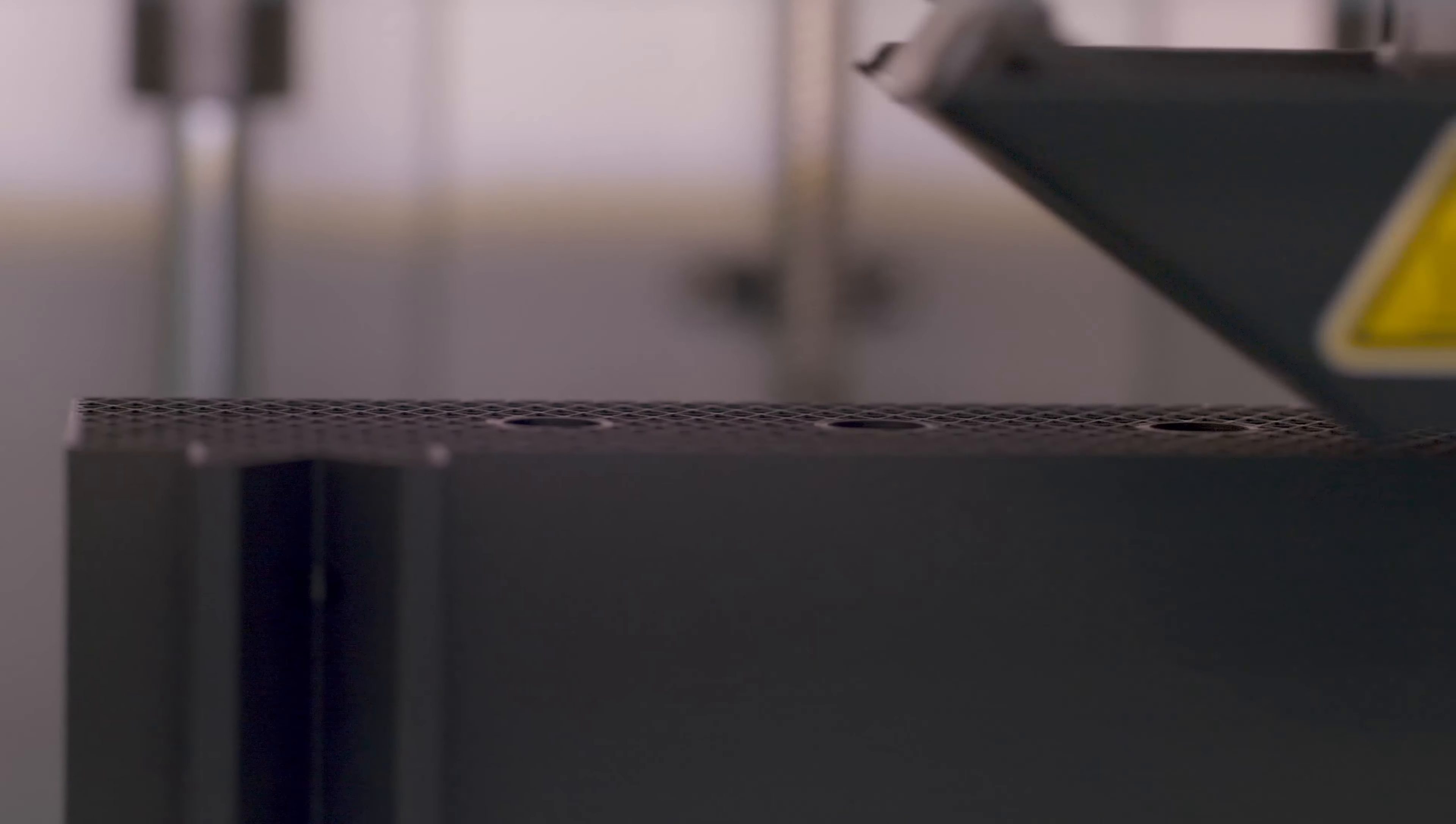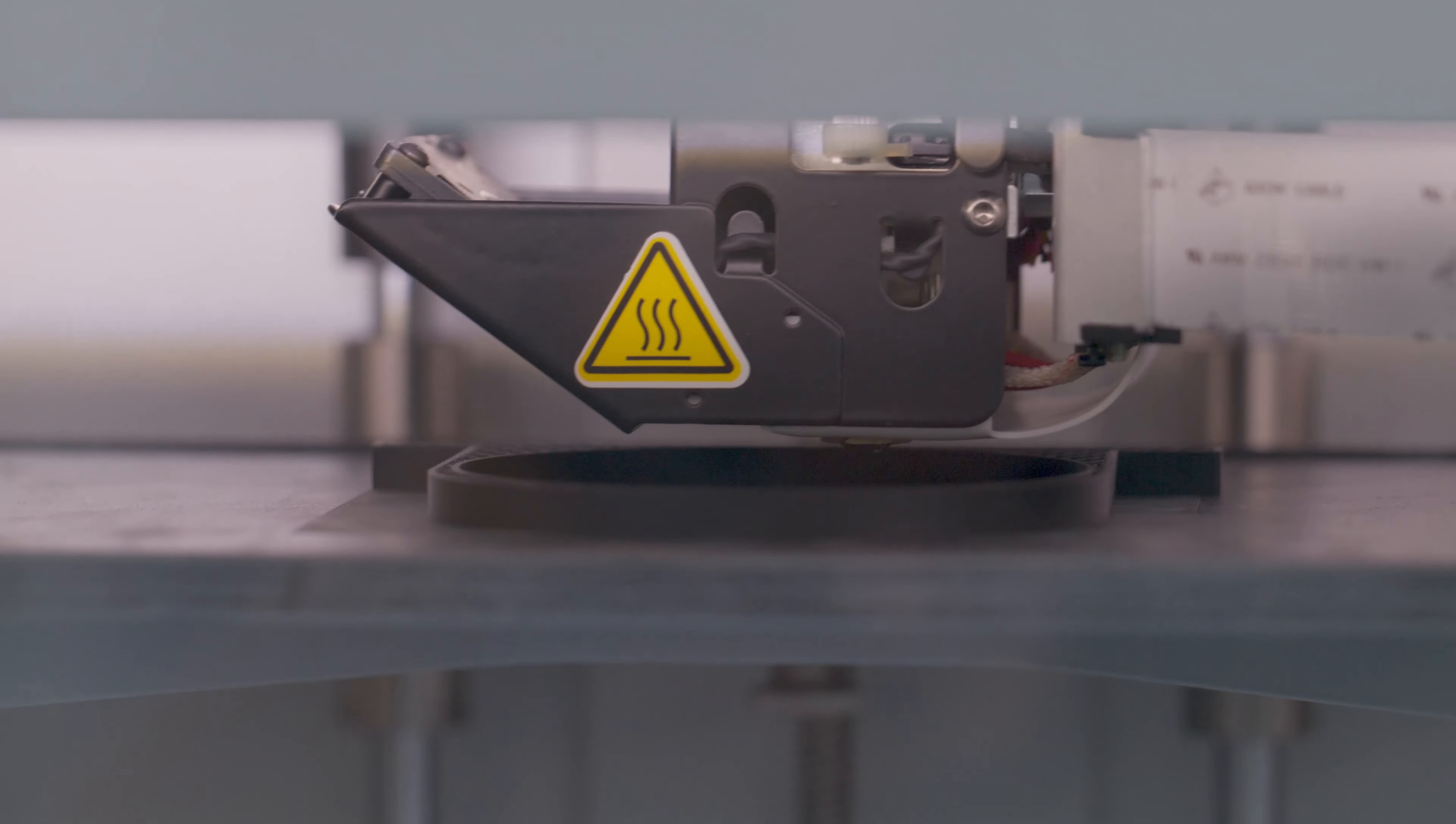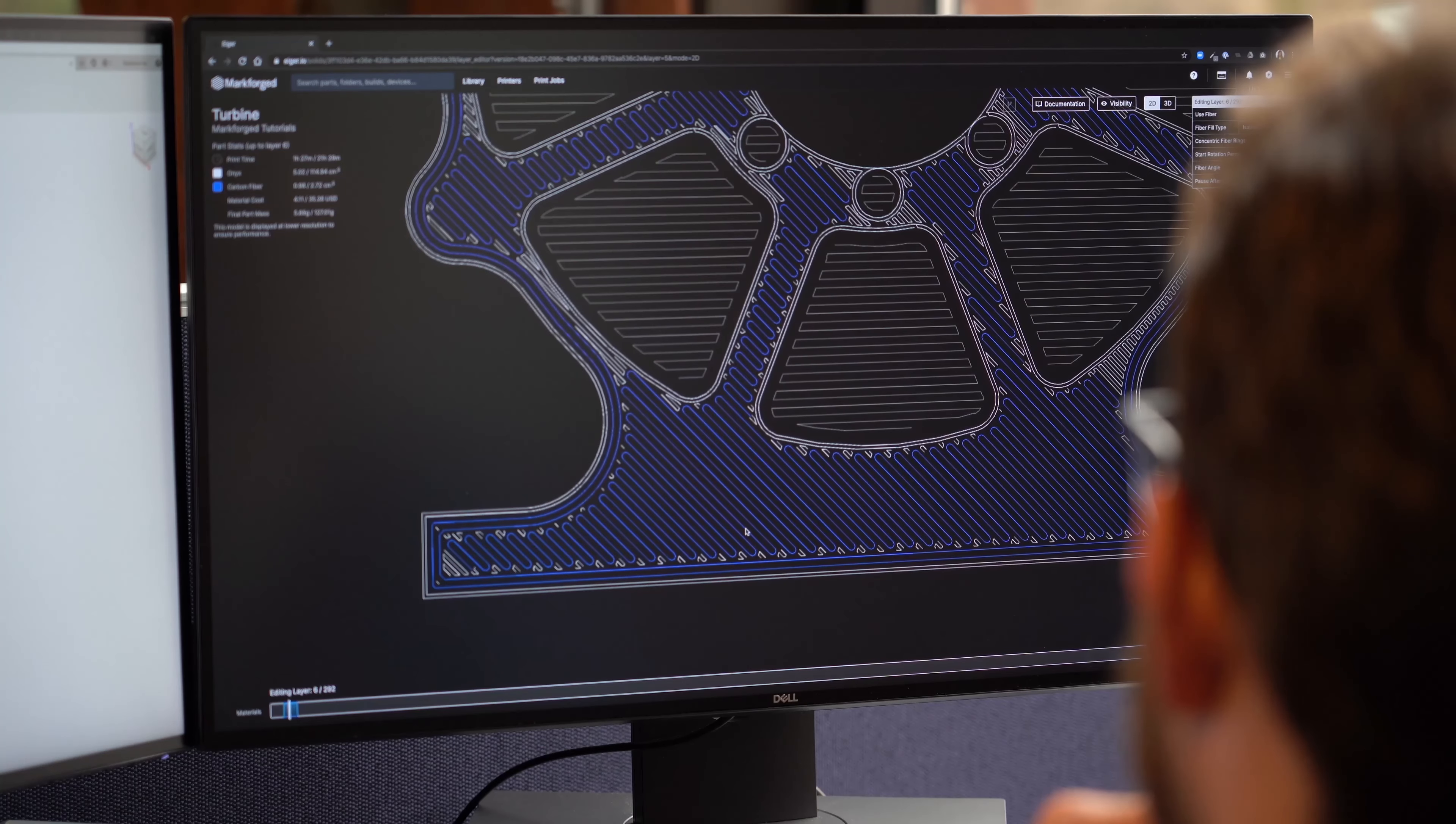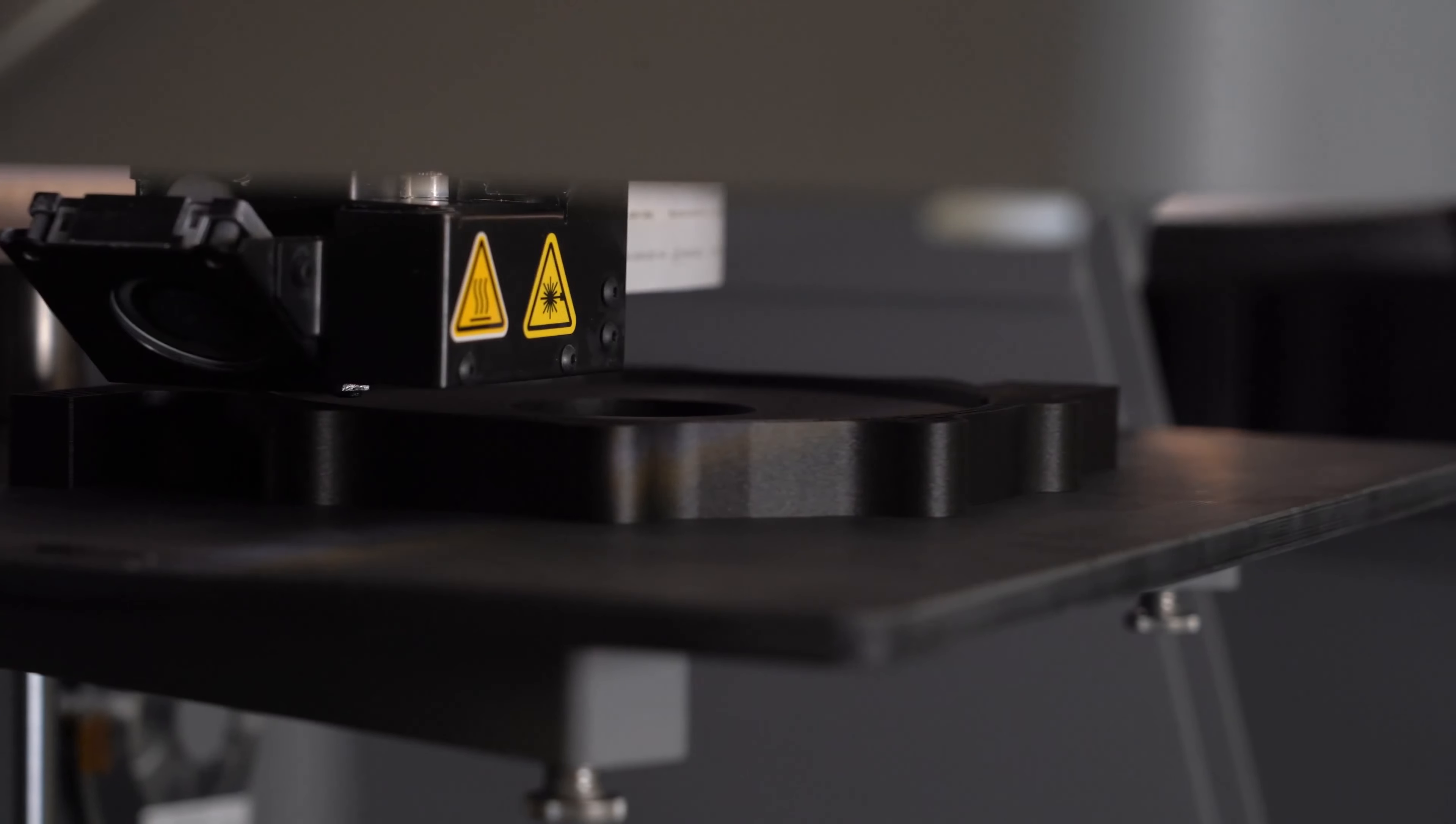The Markforged industrial printers act as a digital factory for us. In the past, you would have to make design decisions and do down selections during the design phase. We can now take three or four different designs, print them out, do the form and function test, and then make a decision which way to go forward. It allows us to cut costs, and that money is realized back within the business units.